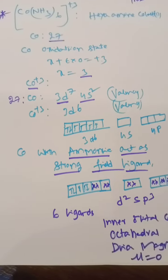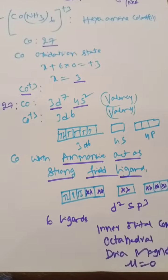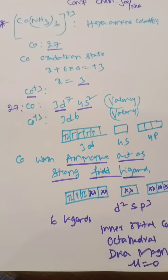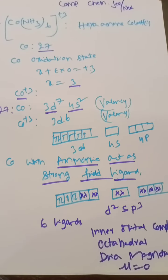Cobalt-27 has the electronic configuration 3d⁷ 4s² for its valency. Cobalt(III) loses 3 electrons and converts to 3d⁶. Please note this.